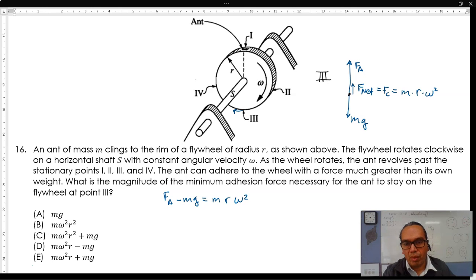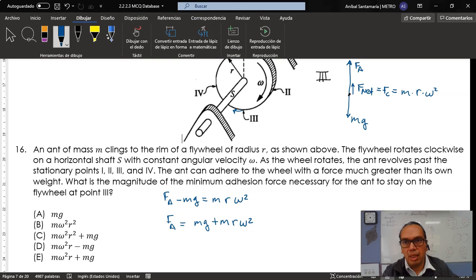In other words, the minimum adhesion force should be equal to mass times G plus Mr omega squared. And that is option E in our list of choices.